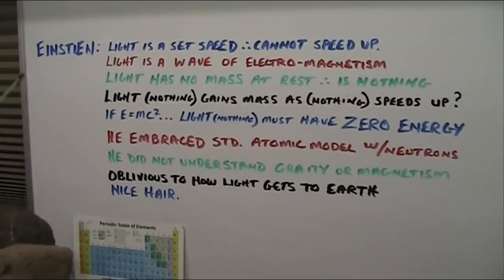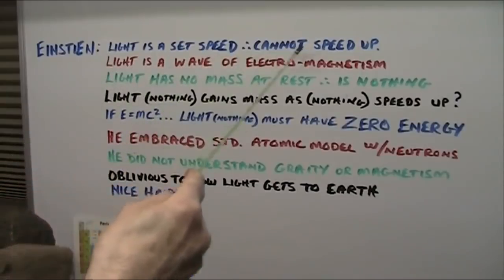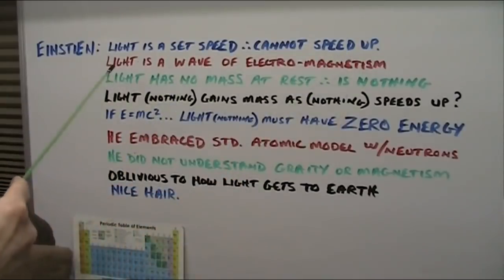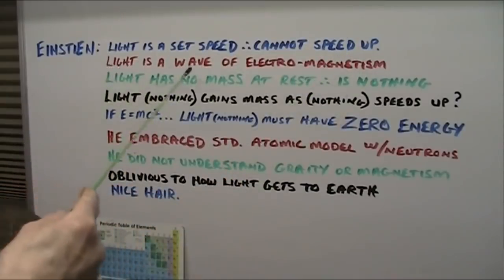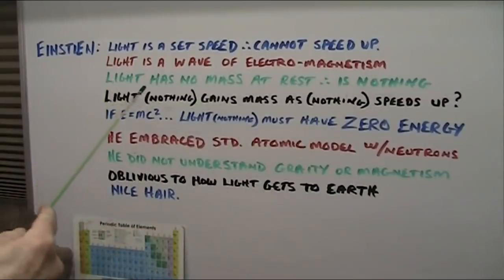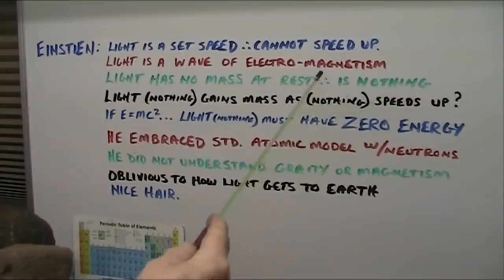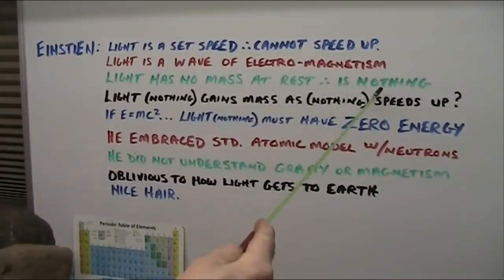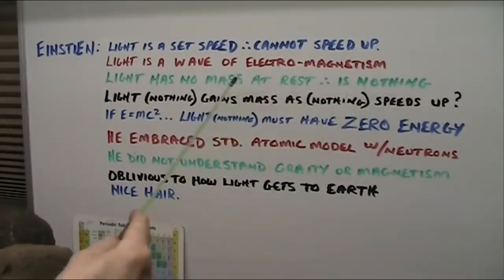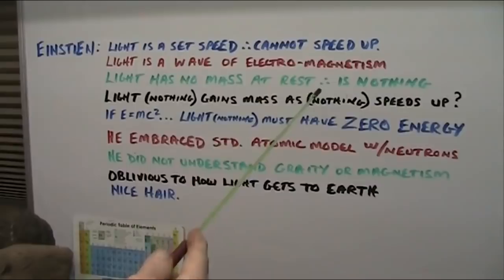These are Einstein's claims and I will dispute virtually all of them. Light is a set speed and it cannot speed up — I dispute that. Light is a wave of electromagnetism — I dispute it. Light has no mass at rest, therefore it is nothing. I don't dispute that it is nothing; I dispute that it has no rest mass. It is an electron — we'll talk about that.